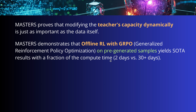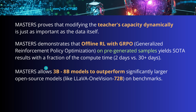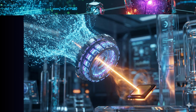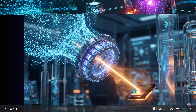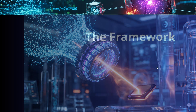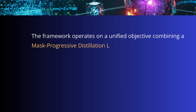MASTERS allows a 3B up to 8B model to significantly outperform larger open-source models like a 72B on particular benchmarks. The framework operates on a unified objective combining the masked progressive distillation loss — where the mask becomes progressively more intelligent — and a dual reward offline reinforcement loss.